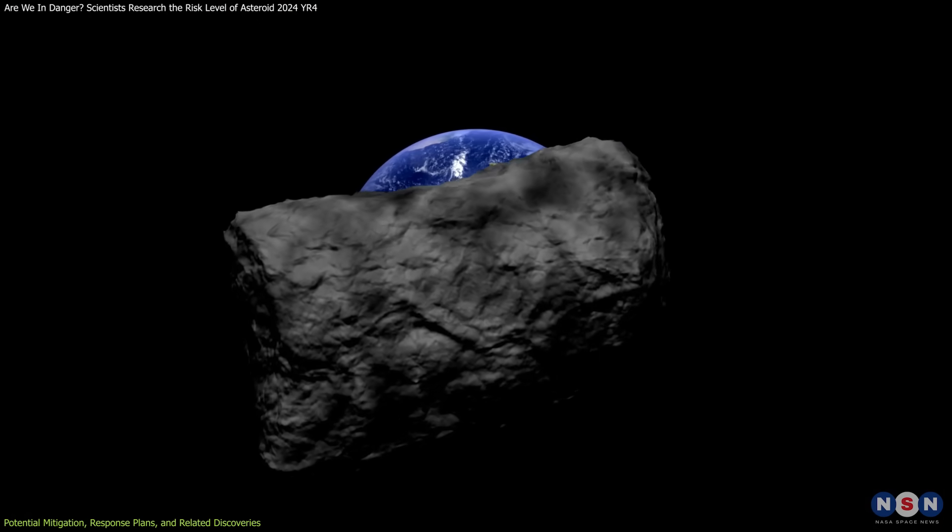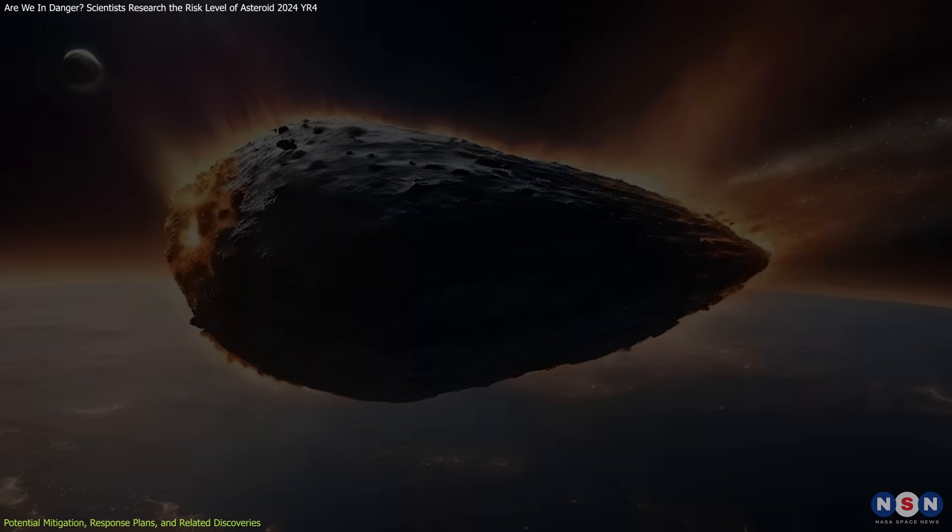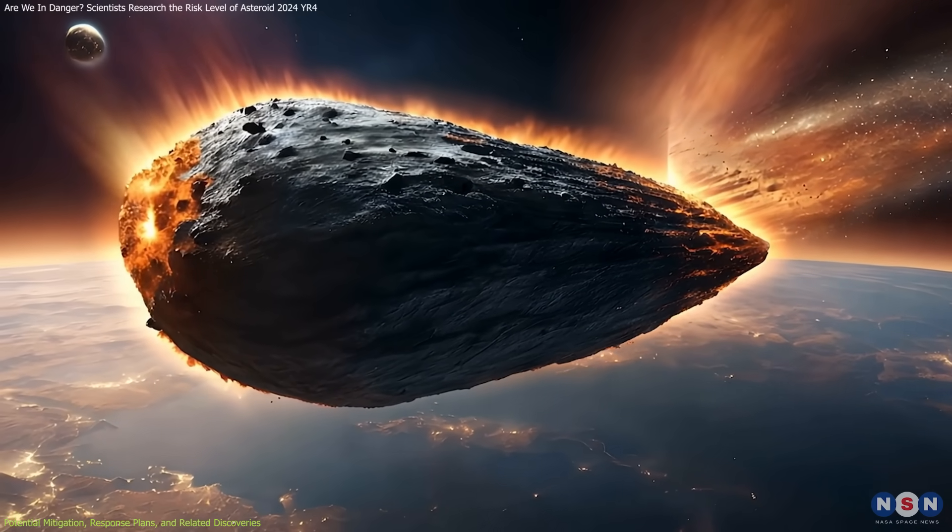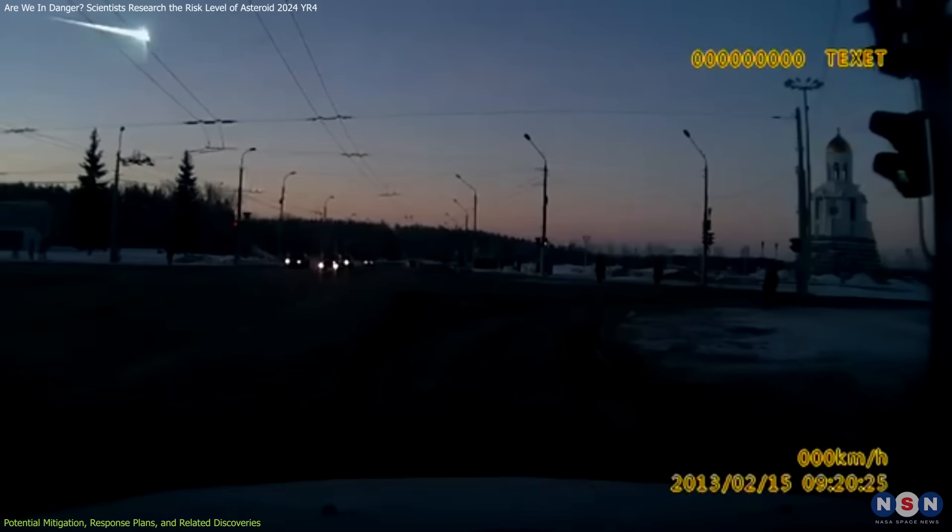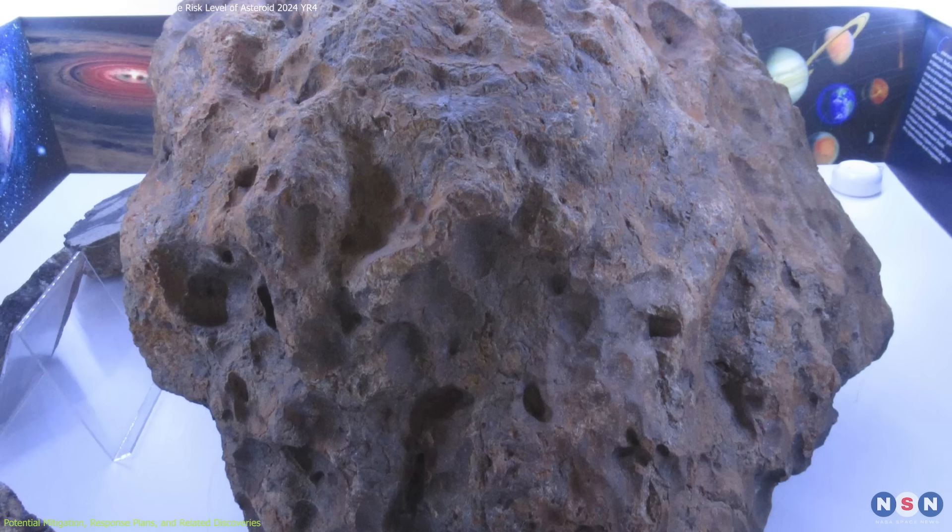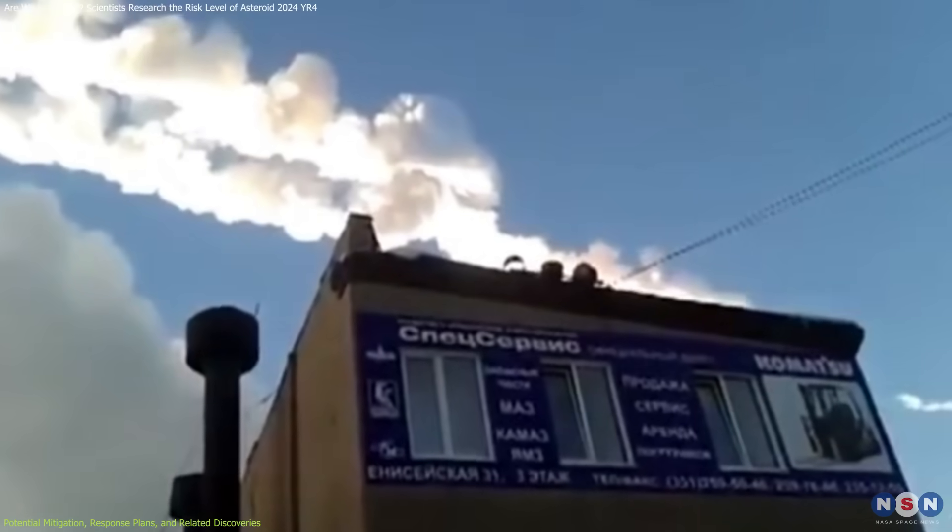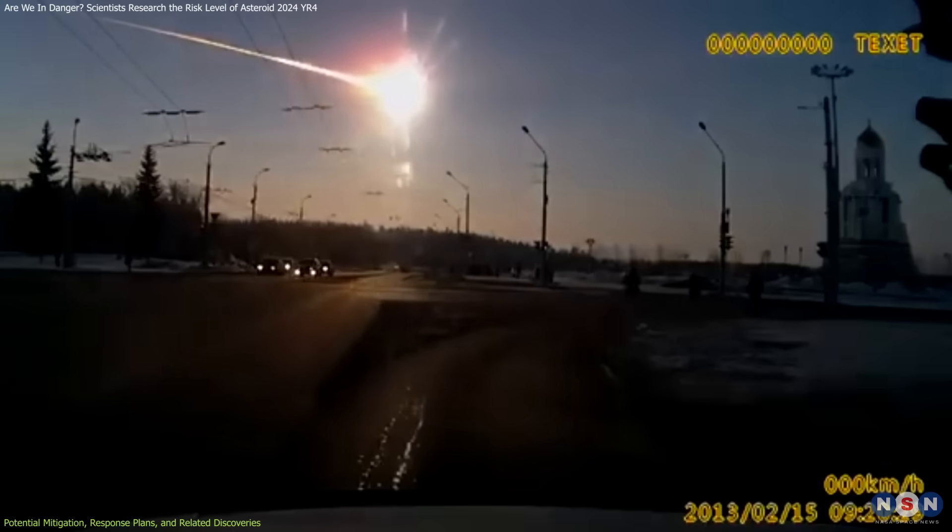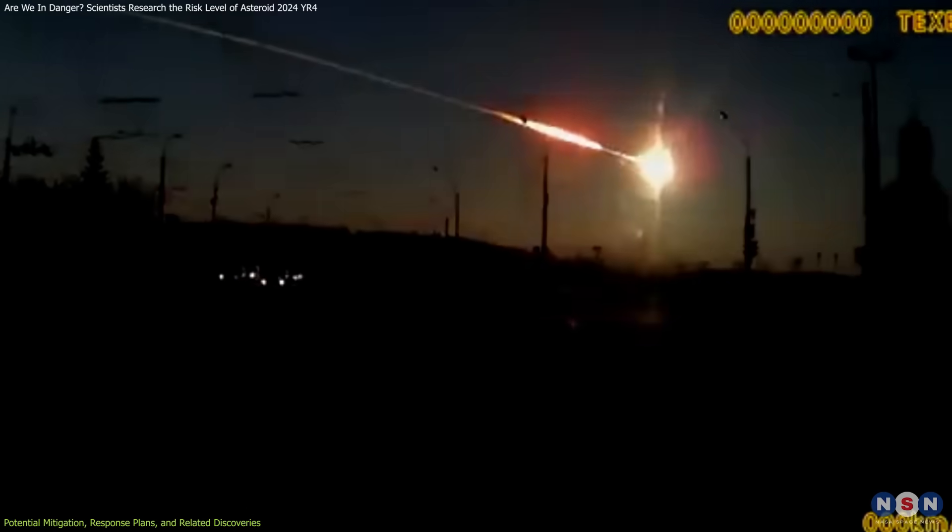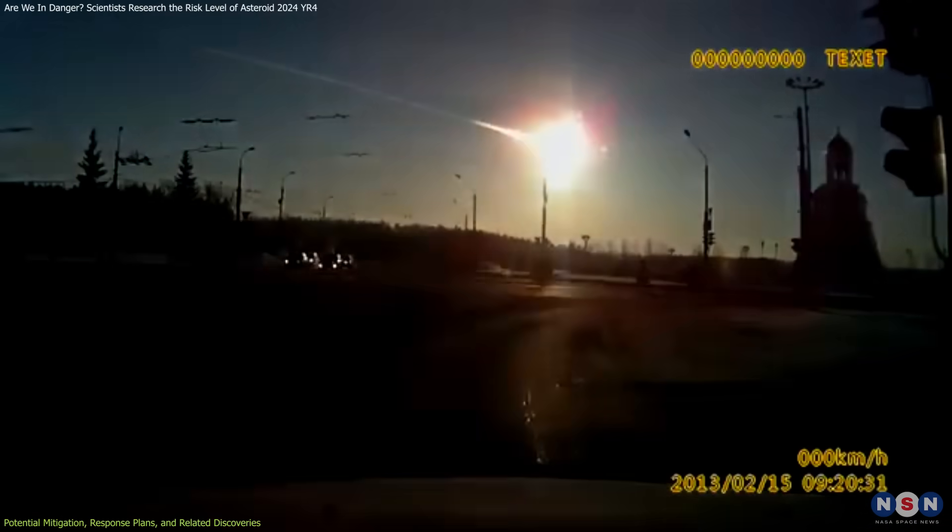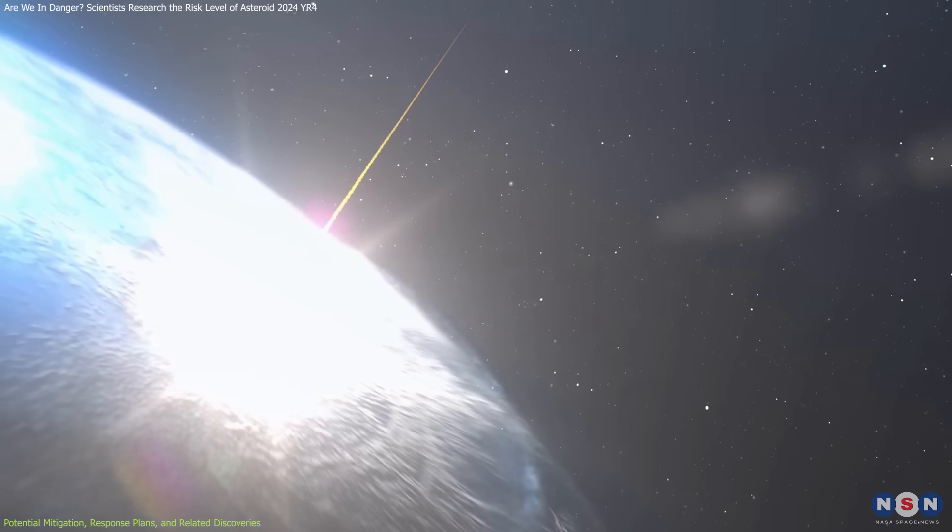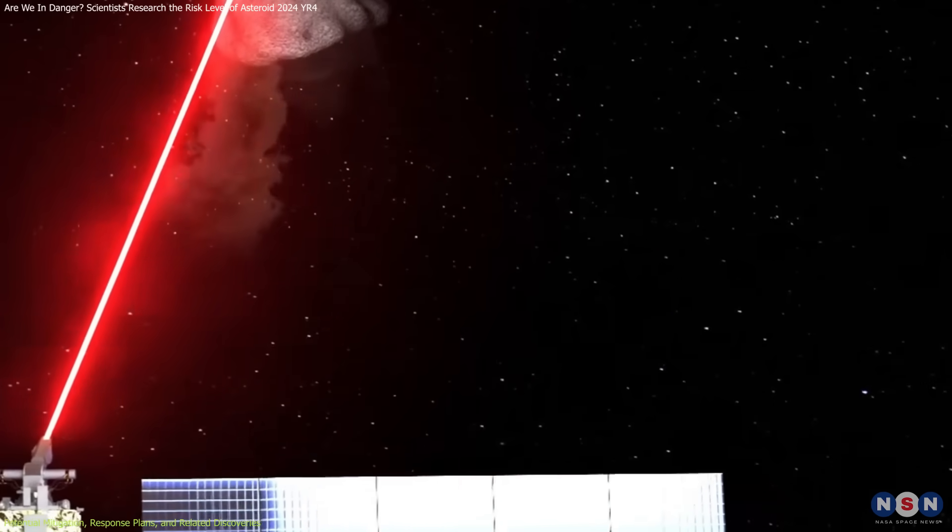Beyond these technological interventions, our understanding of mitigation has also been enriched by studying past near-miss events and related discoveries. For instance, the Chelyabinsk meteor of 2013, while far smaller than 2024 YR-4, provided invaluable data on how atmospheric explosions behave. The detailed recordings of its energy release and the resulting shock waves have informed models of airburst impacts, enhancing our ability to predict the outcomes of similar events. These real-world observations serve as practical evidence of the destructive potential of even modest-sized objects, underscoring the need for effective mitigation strategies.